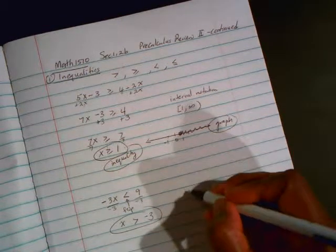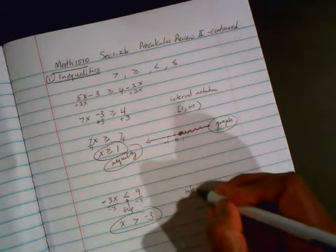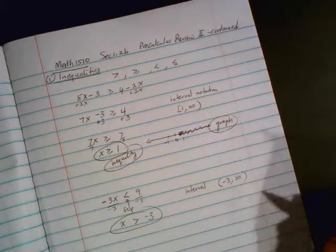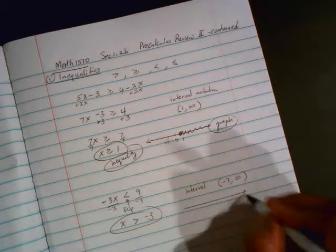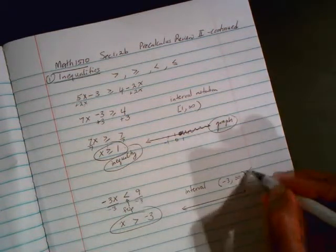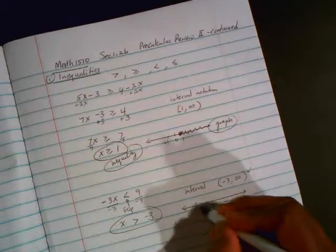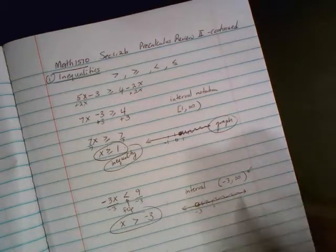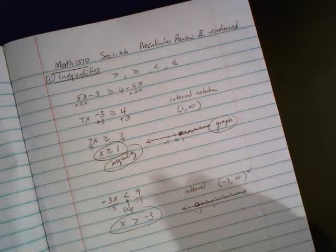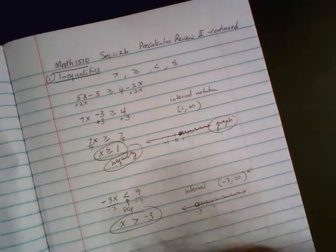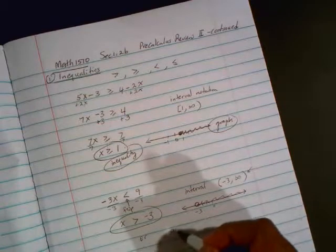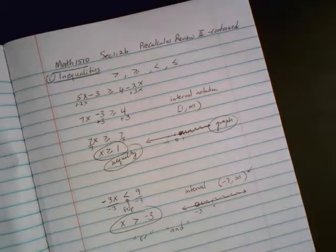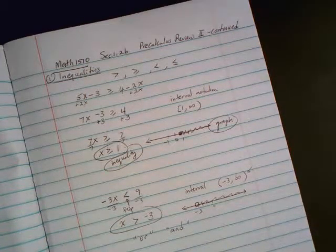The way you would write that as an interval, the interval form. You would write it as, parentheses, negative 3, comma, infinity. Again, it would be easier to do this step if you first graphed. So negative 3, there's a circle there. Greater than, so you're shading on the right. Now, inequalities also come in compound forms and using the word AND or the word OR. And we'll talk about all this in some examples. So we'll move on to the worksheet next.